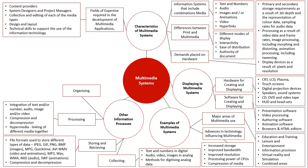With processing, we are obviously looking at how all these different media types are being processed — the integration of text and/or numbers, audio, images, and video all within one file, all being processed at once. So multiple processes for different media types all occurring simultaneously — once again the compression and decompression of all that data. And then the use of hypermedia for linking different documents together within the multimedia system. We may have an area for video and an area for animation within the system, and linking and connecting these together requires some intense programming.